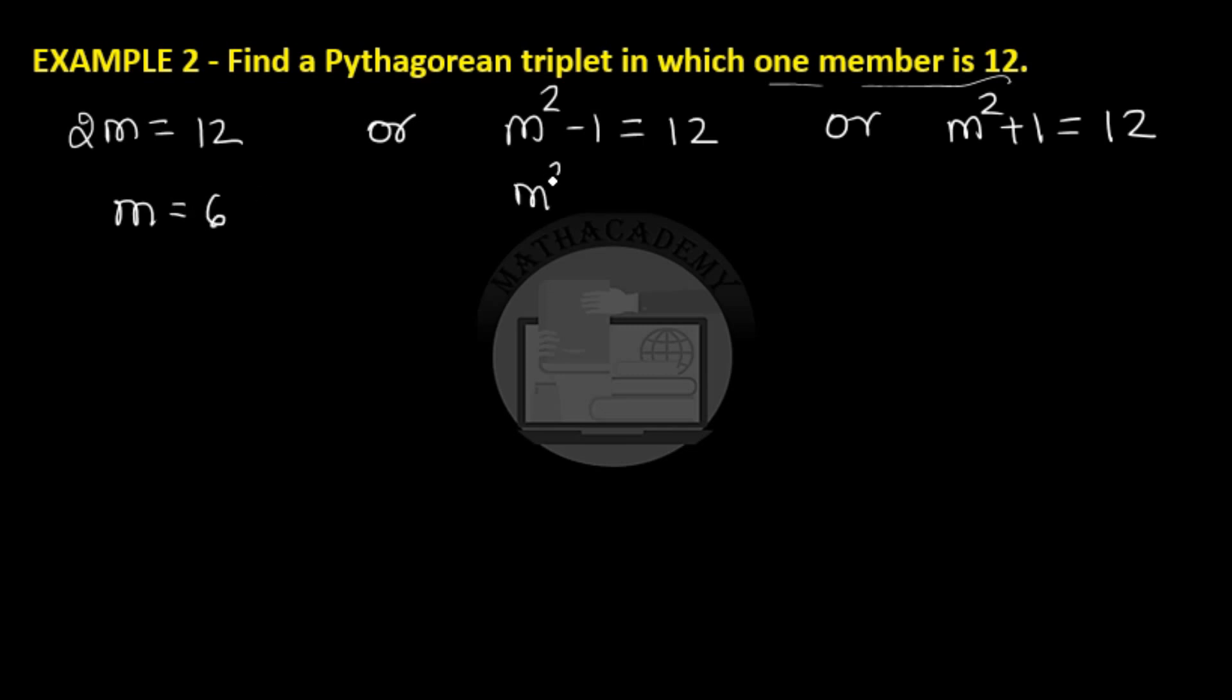From here we get m² as 13. And from here m² is 11. In these two cases, we see that m will not be a natural number because none of the square numbers when squared gives you 13 or 11. 13 and 11 are not square numbers. So the only option left with us is to take m as 6. And now when m is 6, you can figure out all the three participants. So 2m is 12.